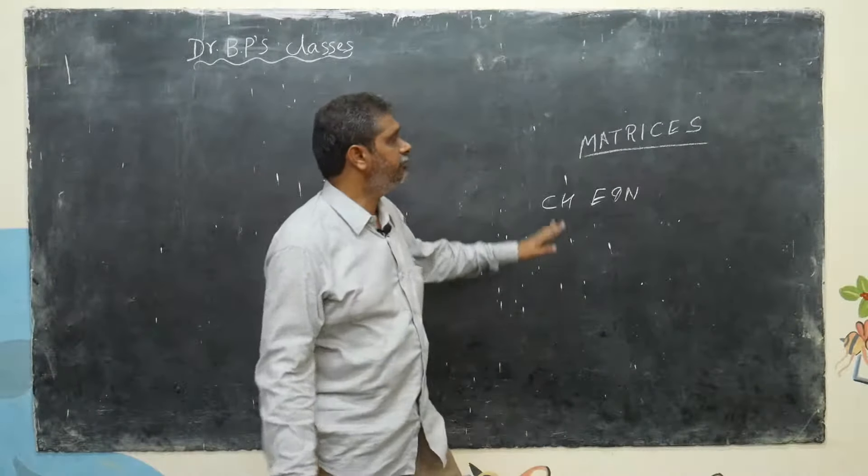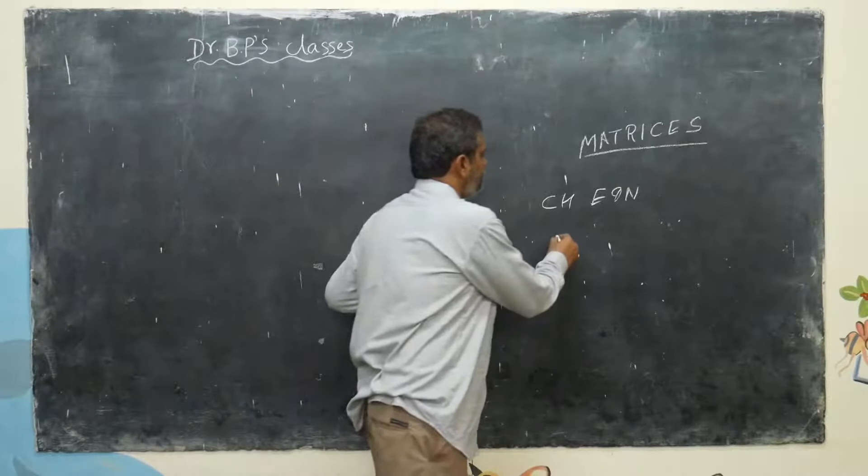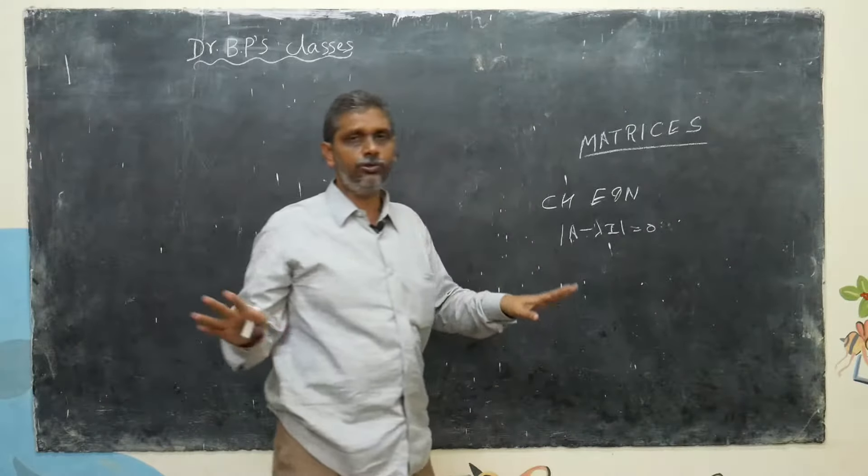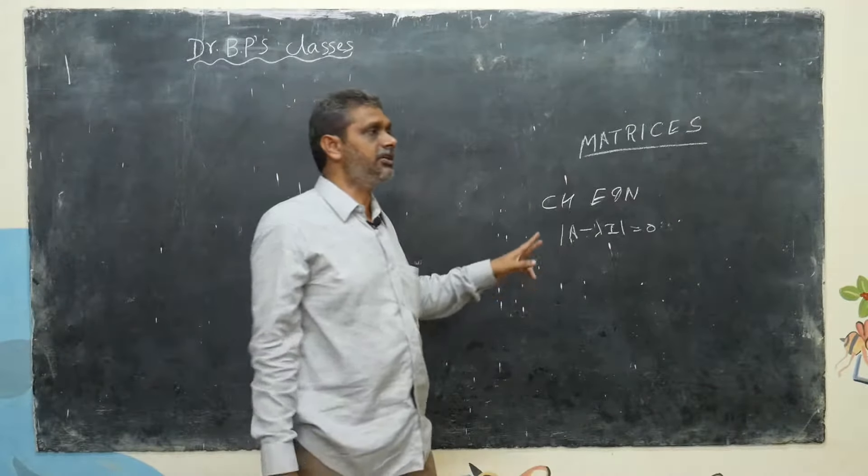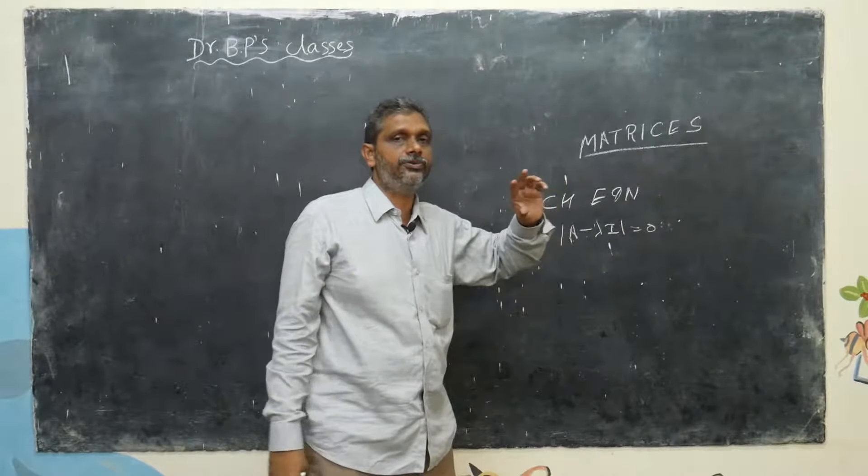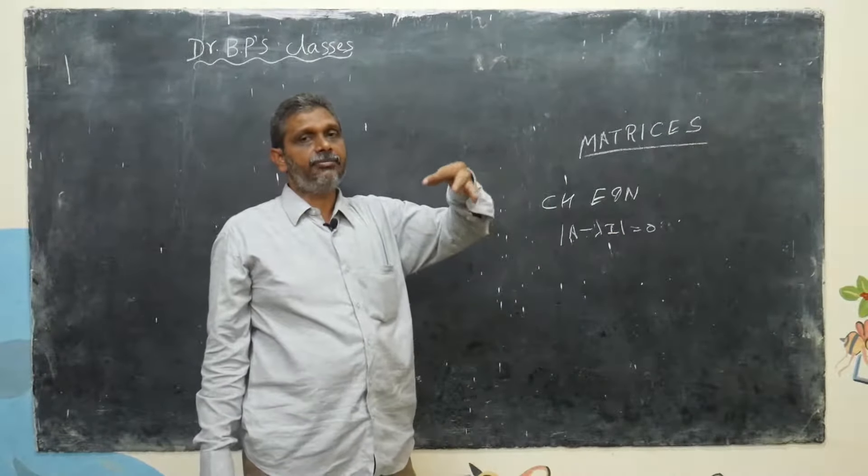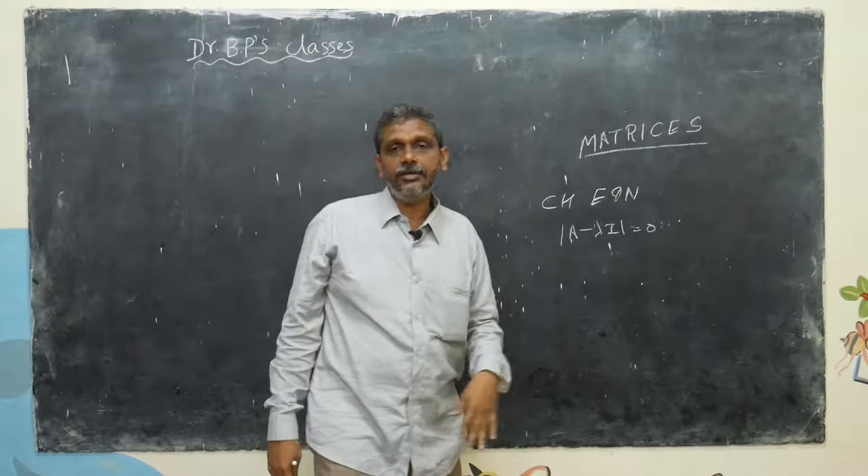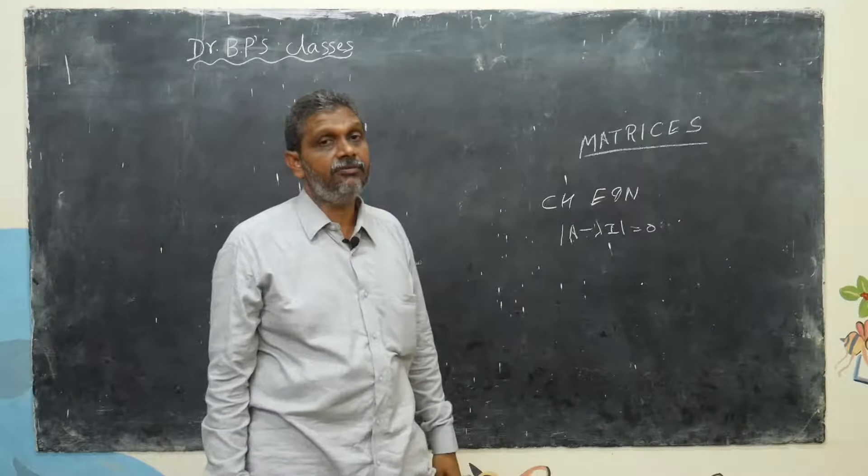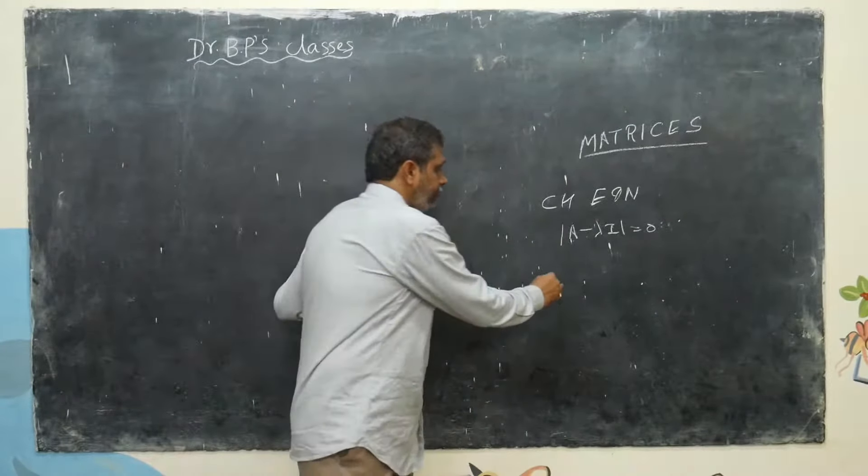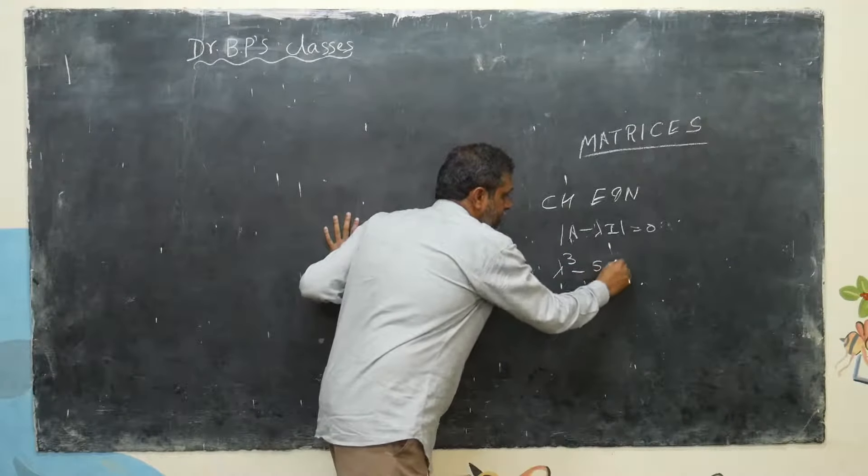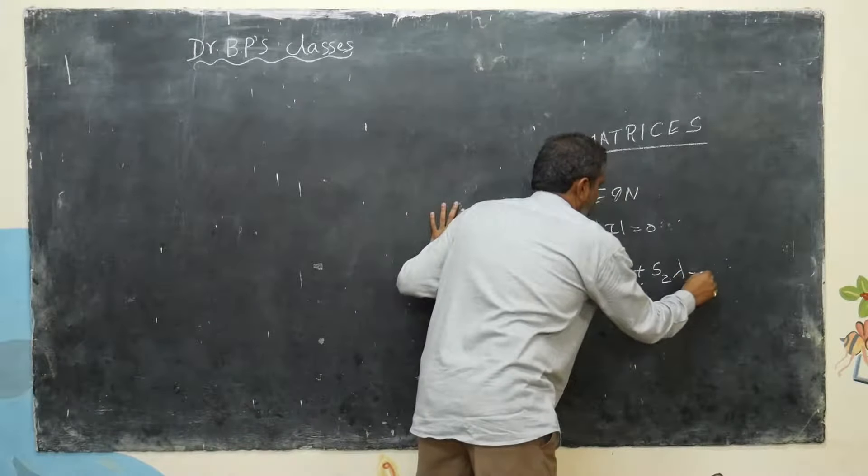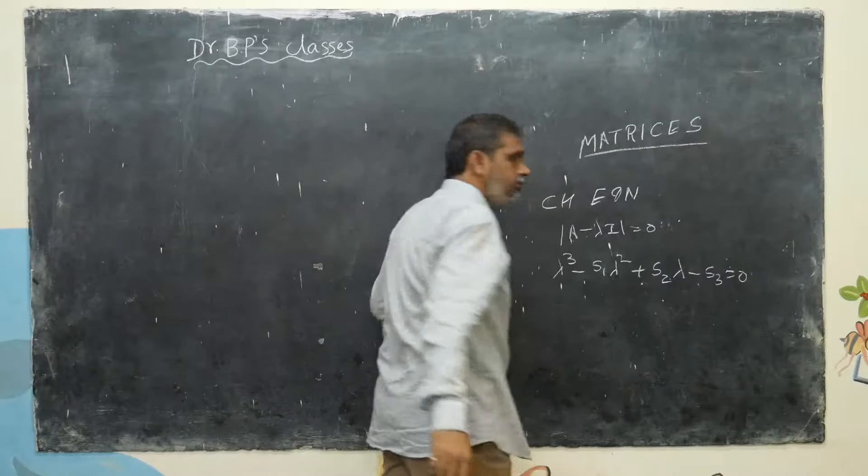How you will write characteristic equation? A minus lambda I equals zero. First you can recall - what is the characteristic equation? A minus lambda I equals zero. Then on diagonal elements, you go minus lambda, minus lambda, minus lambda. Then what you will do? 2 by 2 matrix means AD minus BC. Suppose 3 by 3, what you can take directly? Lambda cube minus S1 lambda square plus S2 lambda minus S3 equals zero.